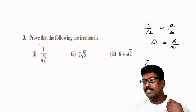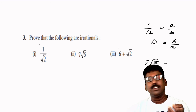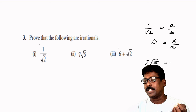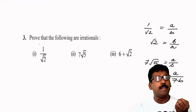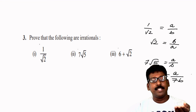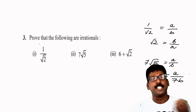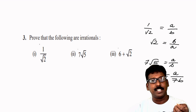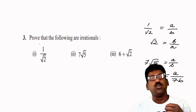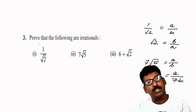In the case of 7 root 5, also take it as rational. Then we can find co-primes a and b such that 7 root 5 equals a by b. Then, what is root 5? Transpose 7 and you will get a by 7b. Since a and b are integers, a by 7b is rational. But this contradicts the fact that root 5 is irrational. This contradiction has arisen because of our incorrect assumption that 7 root 5 is rational. Therefore, 7 root 5 is irrational.